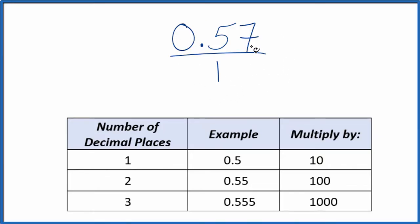What we need to do is get this to be a whole number up here. I have one, two decimal places, so with two decimal places I can just multiply it by 100. 100 times 0.57 equals 57, so now I have a whole number. But I can't just multiply the numerator by 100, I also have to multiply the denominator.